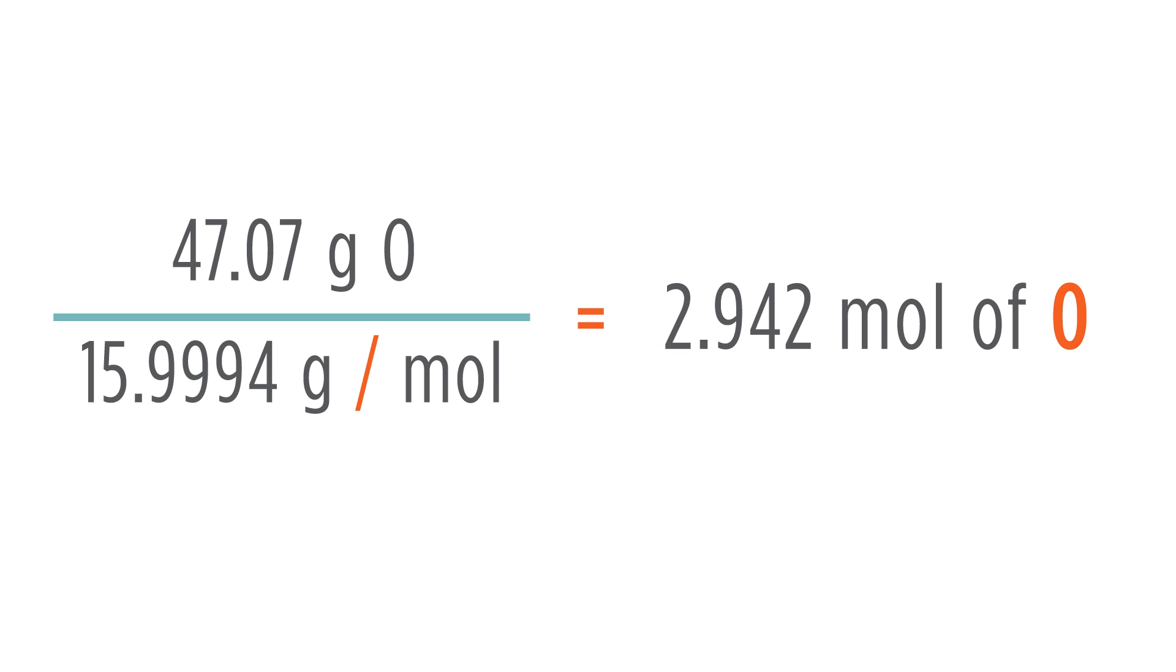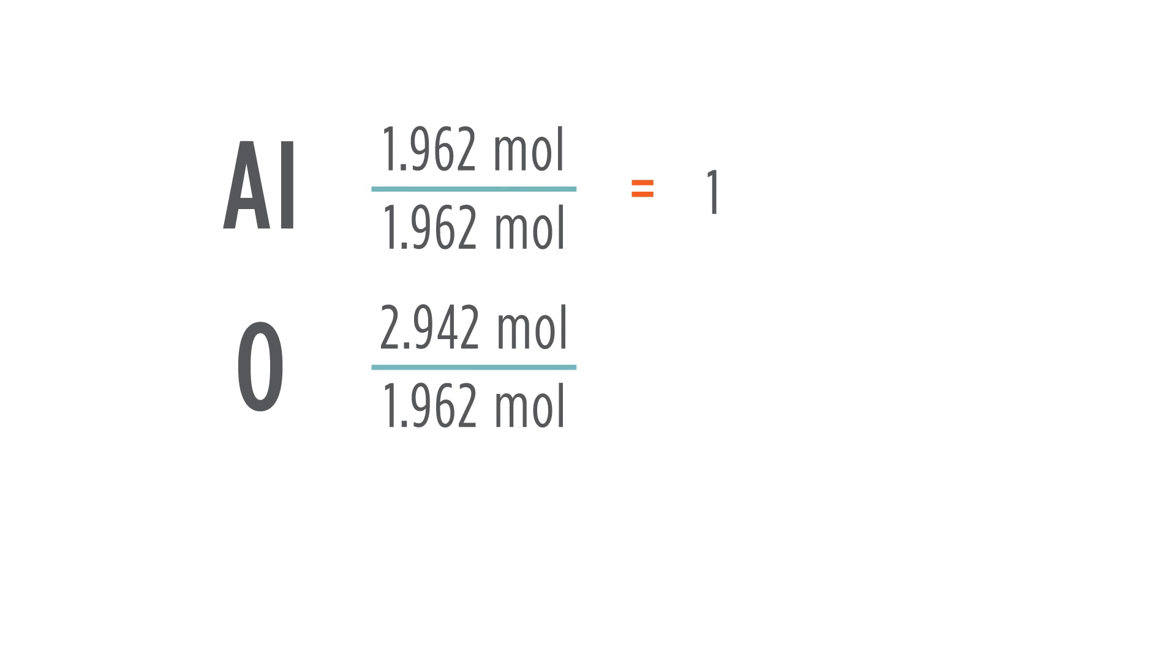If we look at these two numbers, it's obvious that 1.962 is the smaller. So now we're going to divide both of these numbers by the smallest quantity. For aluminum, dividing by itself, 1.962 divided by 1.962 will give 1. For oxygen, 2.942 divided by 1.962 is going to give 1.499.